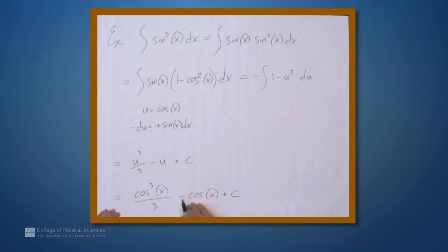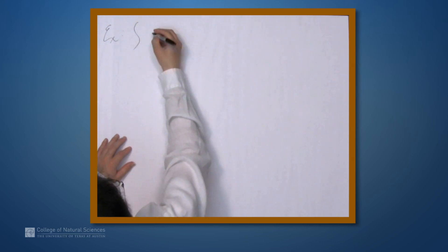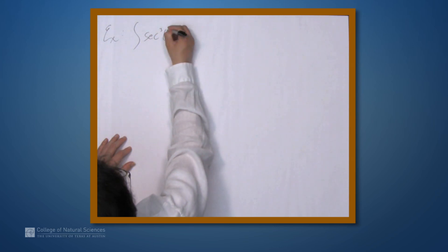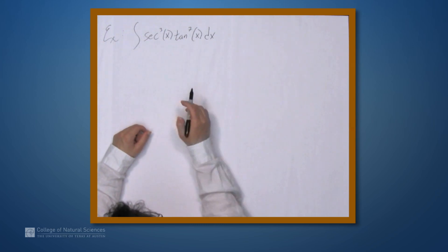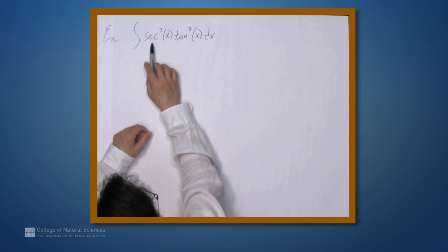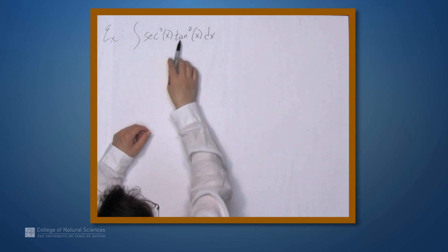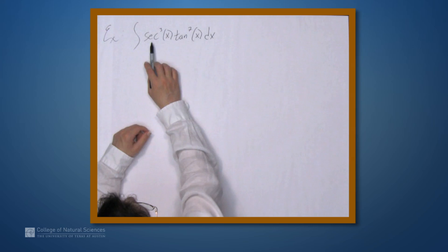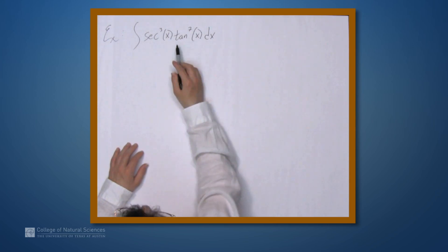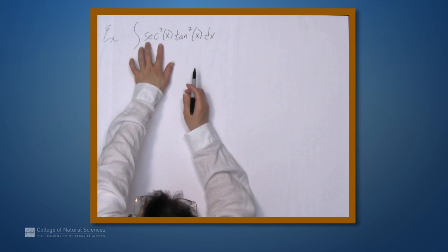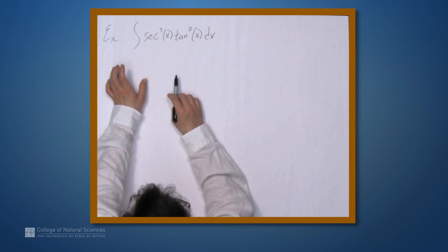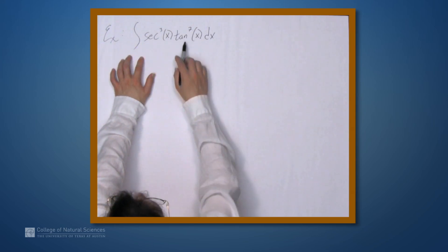Let's look at one more example — something with secants and tangents. Let's look at the integral of sec³x · tan⁷x dx. The strategy is similar: we have an identity relating sec² and tan², and a relationship between their derivatives — the derivative of secant is sec·tan, and the derivative of tangent is sec². We need to find either a copy of the derivative of secant or tangent. We could factor out one sec and one tan giving us the derivative of secant, or factor out two secants for the derivative of tangent. Factoring out two secants leaves only one secant, which can't easily be rewritten in terms of tangent — we'd want sec². So our strategy is to factor out a copy of the derivative of secant.